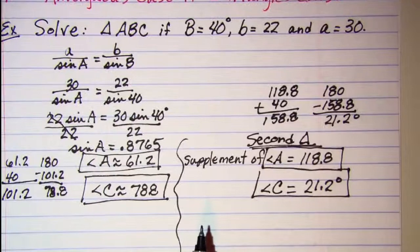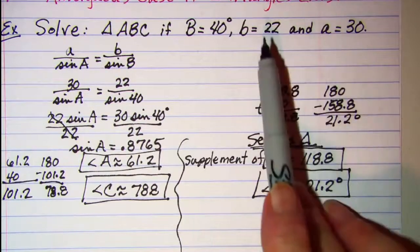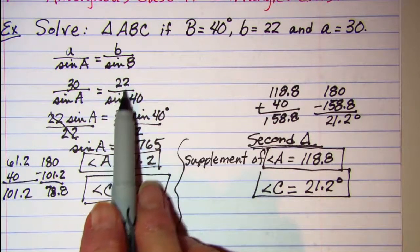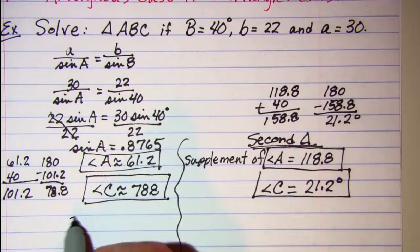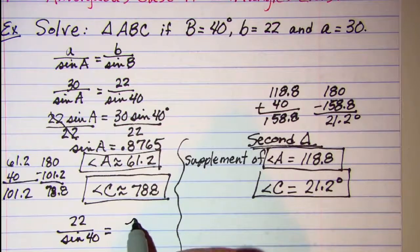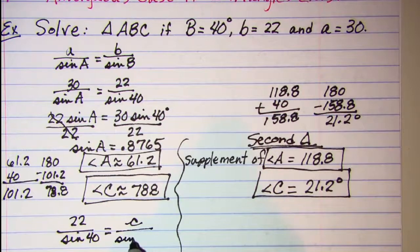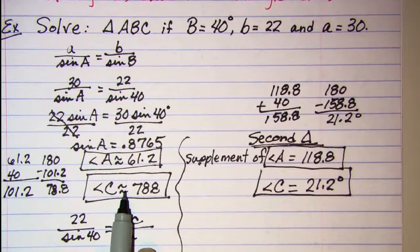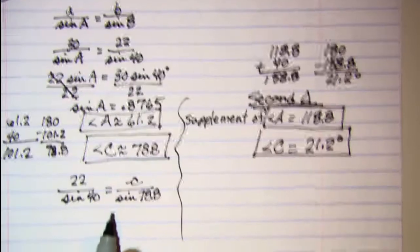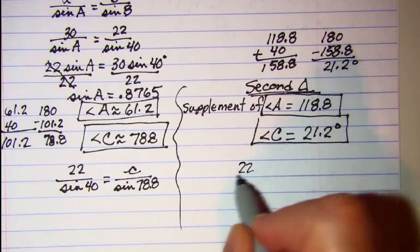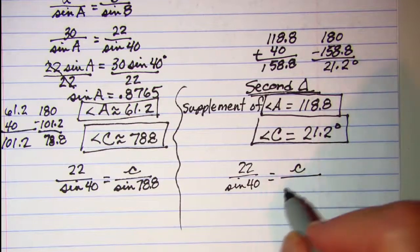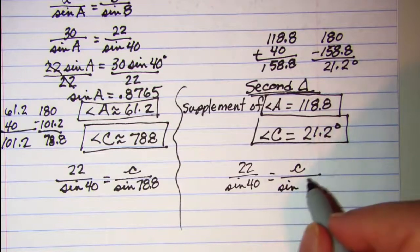Now we still need to find our third side. We were given A and B, so we need to find side C, and we'll use this ratio. 22 is to the sine of 40 as side C is to the sine of—now for this triangle, angle C was 78.8—and then we can also set up the same thing to find side C. But this one we want our angle C to be the 21.2.